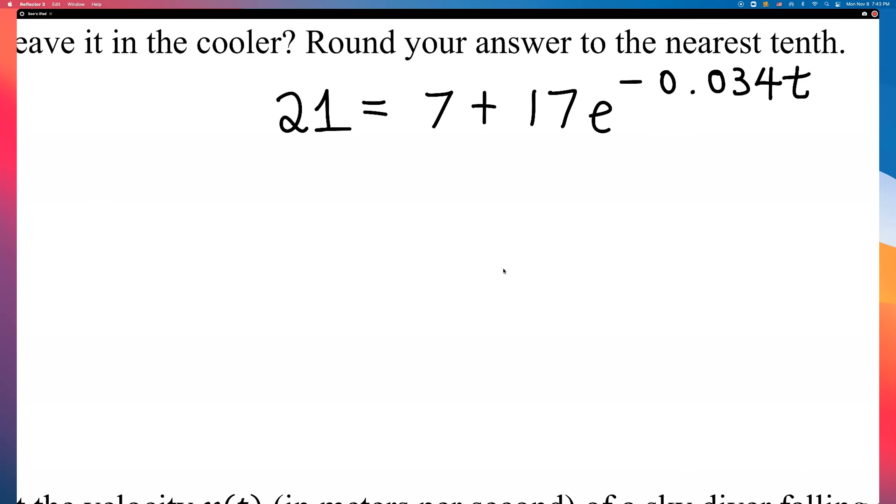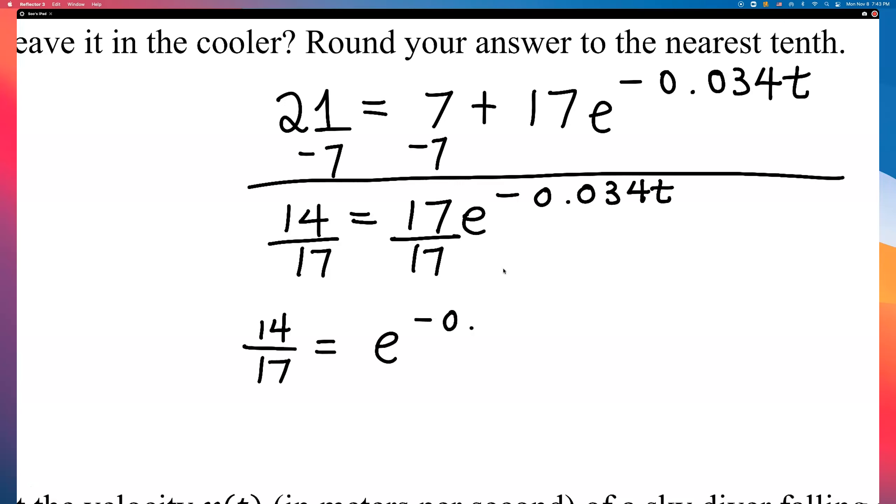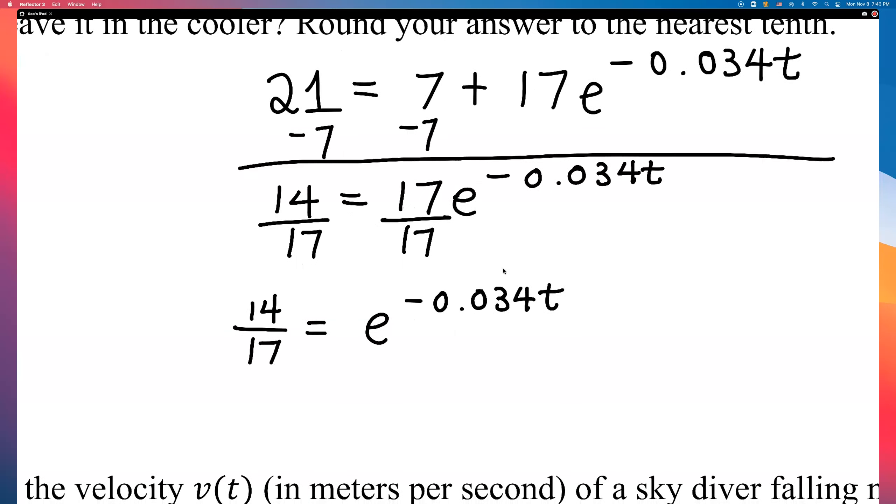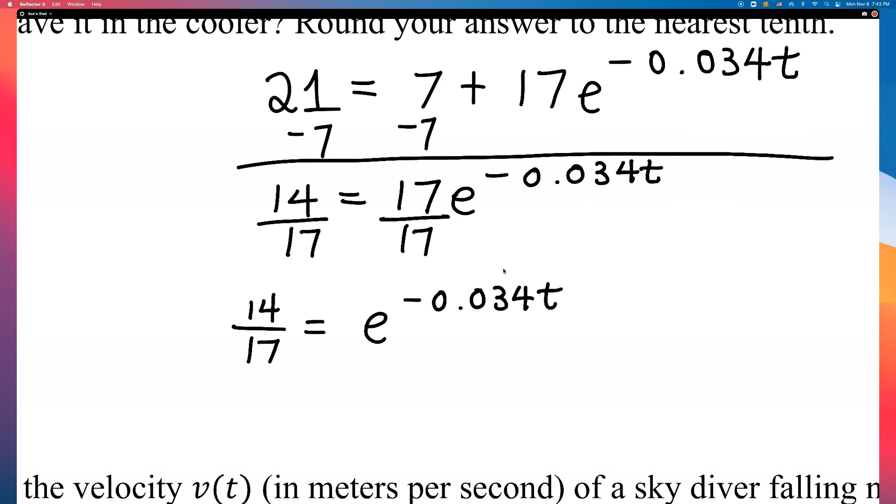Okay. First, let's subtract 7 from both sides. We'll get 14 equals 17 times E to the negative 0.034t. Alright. I'm going to divide both sides by 17. If we do that, we get 14 over 17 equals E to the negative 0.034t. So, the first two steps, we're just isolating that exponential term. Now, the fun part, to bring that down, we're going to take a natural log of both sides.